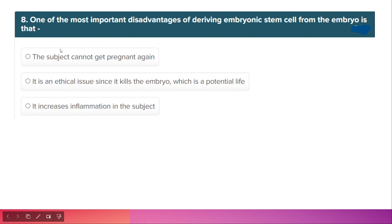One of the most important disadvantages of deriving embryonic stem cells from the embryo is discussed here. The option that the subject cannot get pregnant again is wrong. The correct answer is that it is an ethical issue since it kills the embryo, which is a potential life.